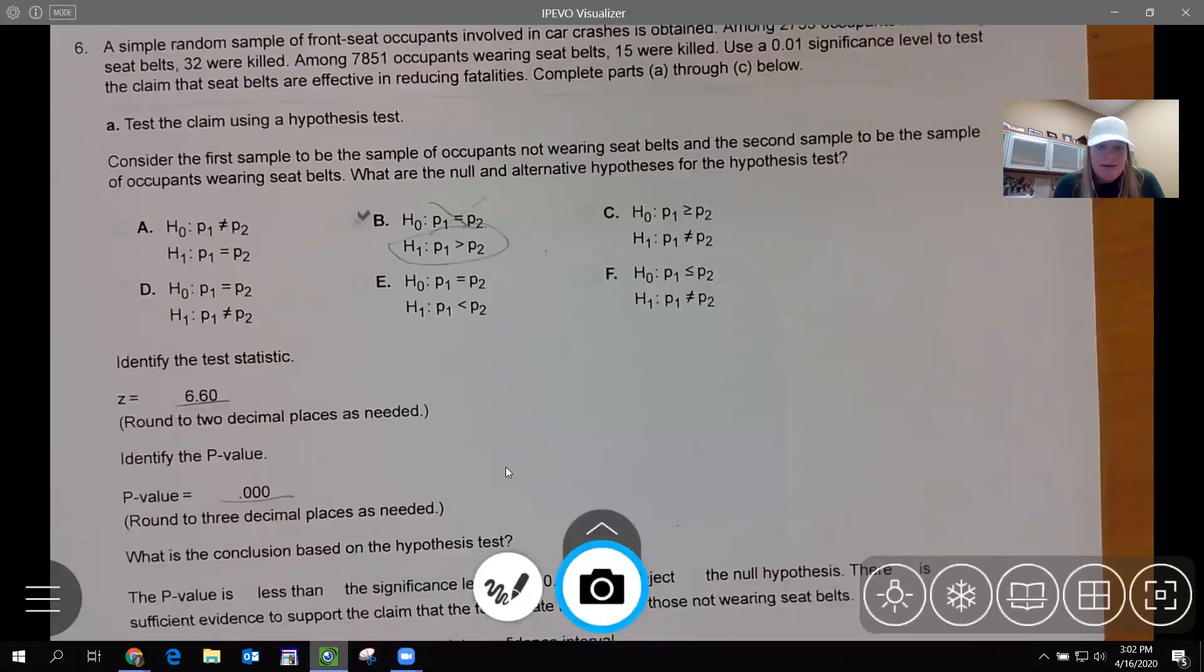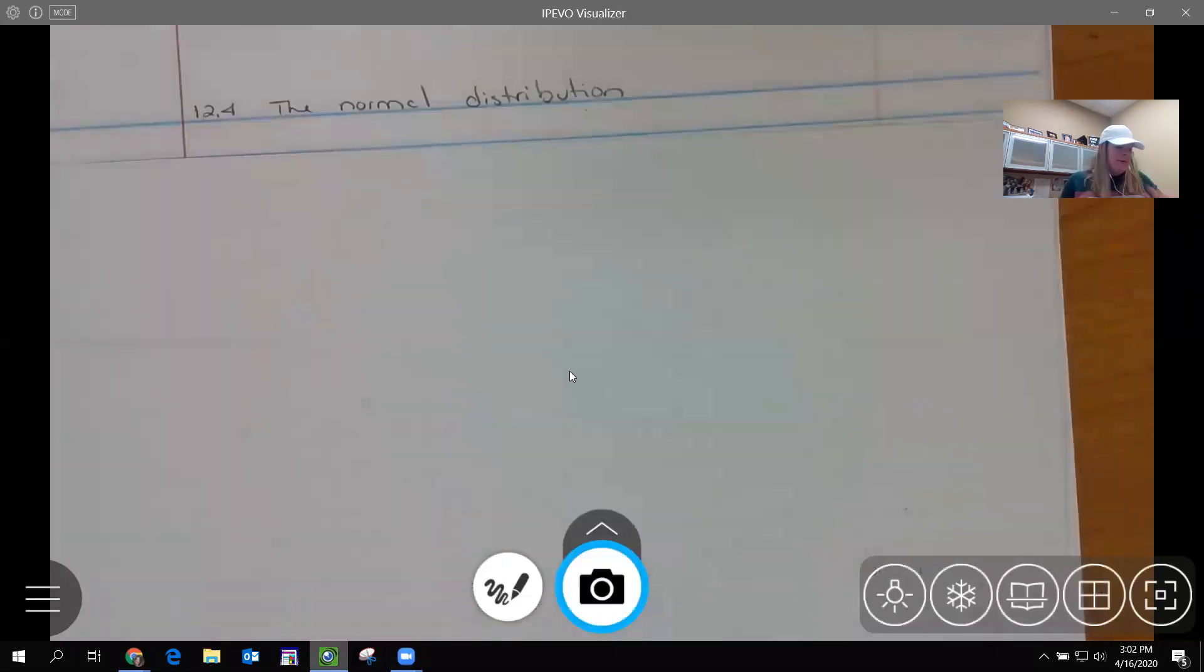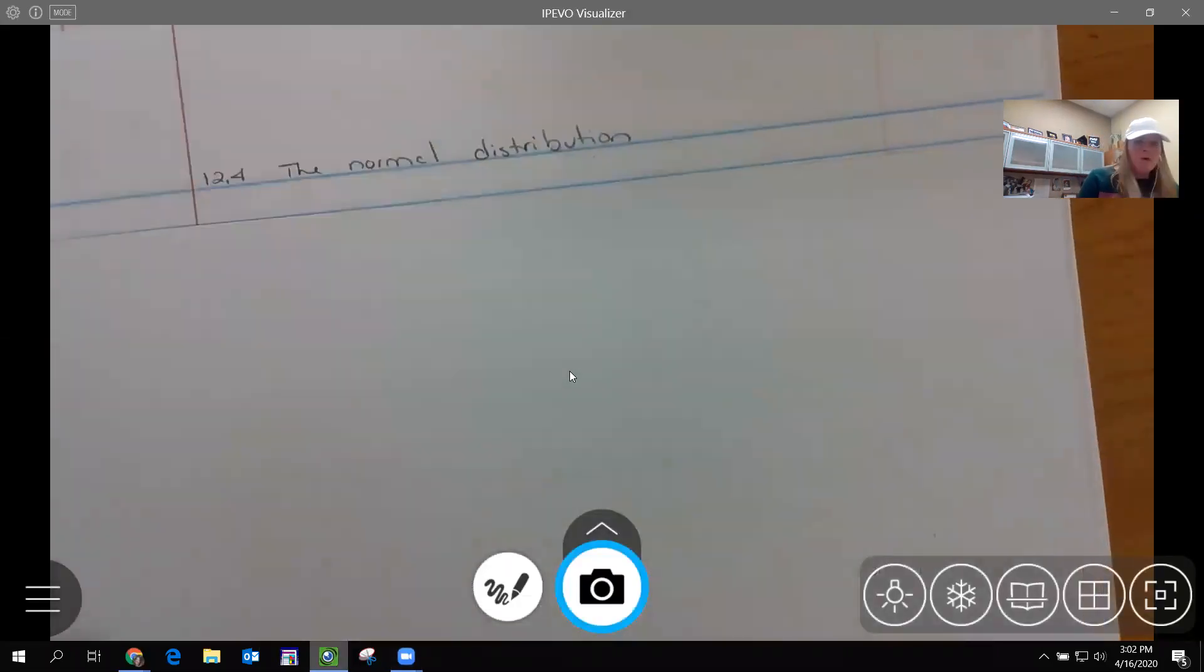Hey class. This video is going to help with 12.4, our last section in Math 1000. So what is this one about? It's about normal distributions. Give me a sec. Let me share my screen. We're going to open this up. So 12.4, the normal distribution.